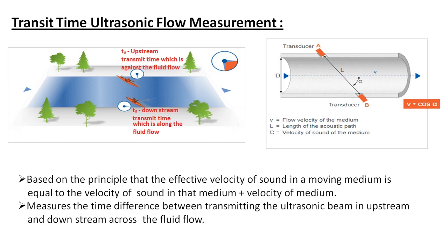It measures the time difference between transmitting the ultrasonic beam upstream and downstream across the fluid flow. The system consists of two transducers, A and B, which emit ultrasonic waves into the moving medium. The wave traveling from A to B downstream takes less time than the wave traveling from B to A, because the downstream wave is aided by the fluid flow velocity while the upstream wave moves against the flow.